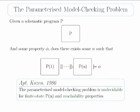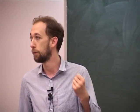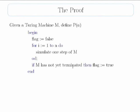We begin with the parameterized model checking problem. Given a schematic program P — basically a program defined with an input N — we ask: is there some value of N such that the program defined by N satisfies a certain property phi? It was shown by Apt and Cosen in 1986 that this problem is undecidable, even if each particular P(N) is finite state. The reason is simple: if you take a Turing machine and say your Nth program is the finite state machine that runs the Turing machine for N steps, then asking whether there exists an N such that the machine terminates in N steps is solving the halting problem — immediately undecidable.